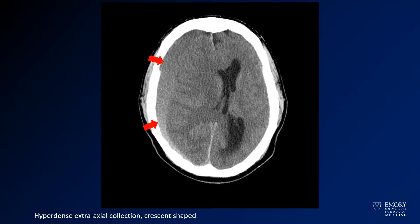Here you see the crescent-shaped collection outside of the brain along the inner portion of the calvarium. It's definitely crescent-shaped, it's definitely crossing sutures, and it's definitely along the falcine reflections of the dura there.